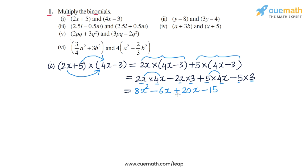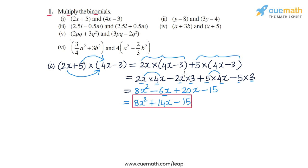Of these four terms, minus 6x and plus 20x are like terms, so we combine them. We get 8x squared, minus 6x plus 20x becomes plus 14x, and then minus 15. So 8x squared plus 14x minus 15 is the answer for the first part.